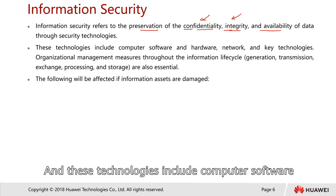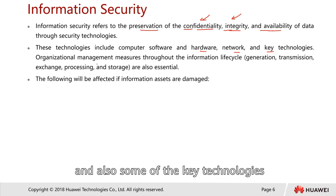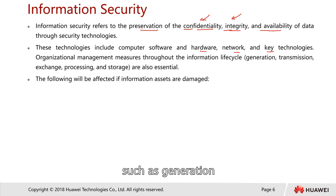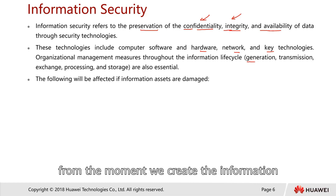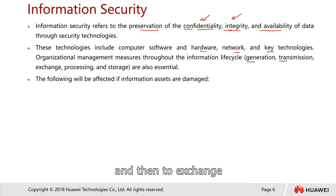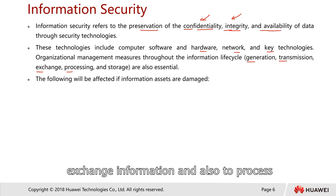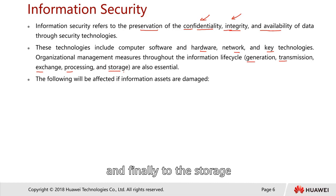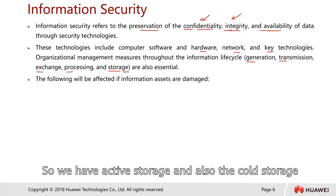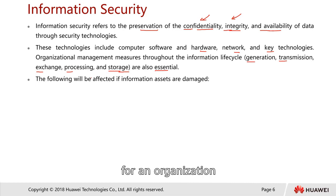These technologies cover organizational management measures throughout the information life cycle: generation — from the moment we create information — through transmission, exchange, processing, perhaps through business intelligence, and finally storage. We have active storage, cold storage, and archive storage. All of these are very essential for an organization.